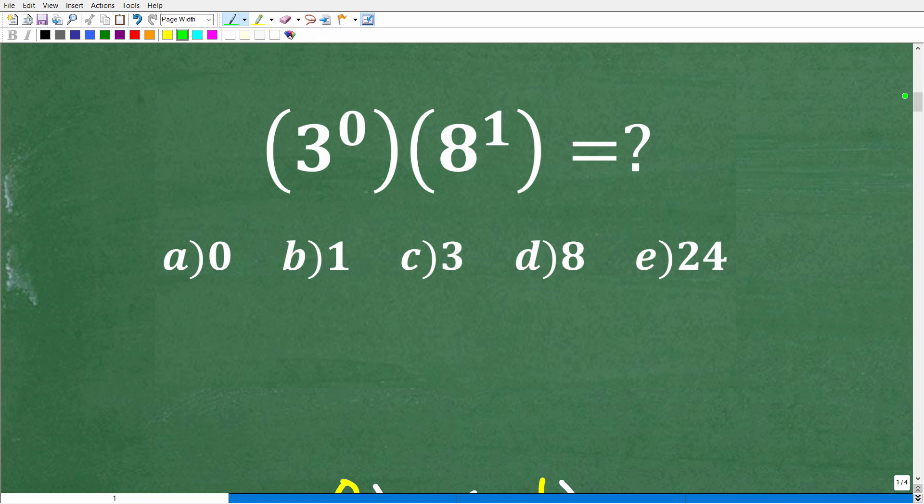Here is our problem. Let's take a look at 8 to the 1st. A quick review of powers and exponents: 8 to the 1st means just 8, effectively. 8 squared means we're going to multiply 8 by itself two times. That's 8 times 8, or 64.